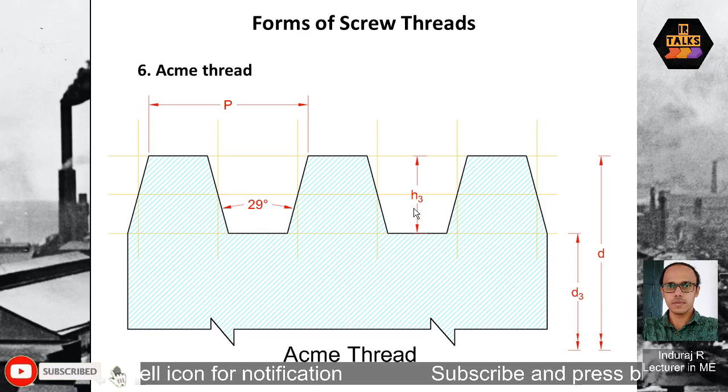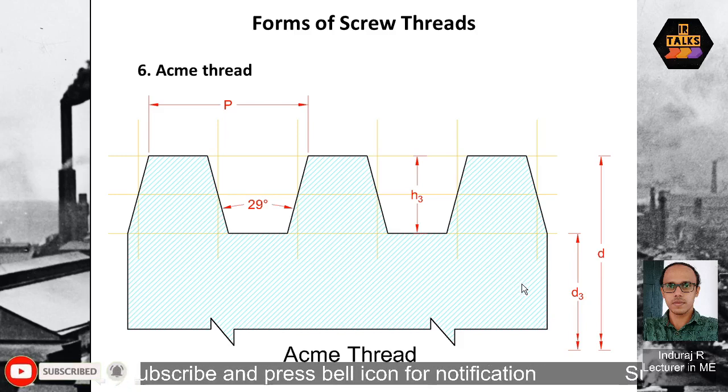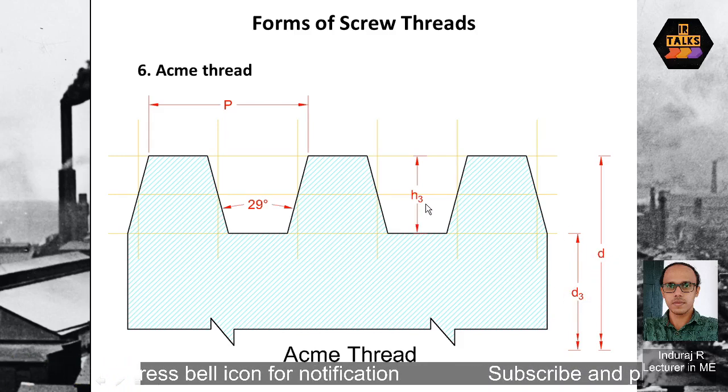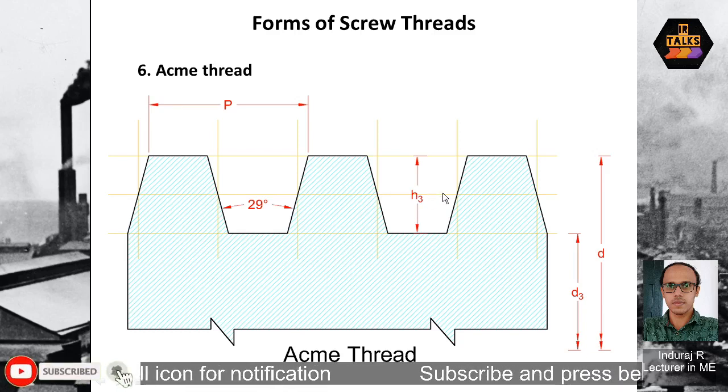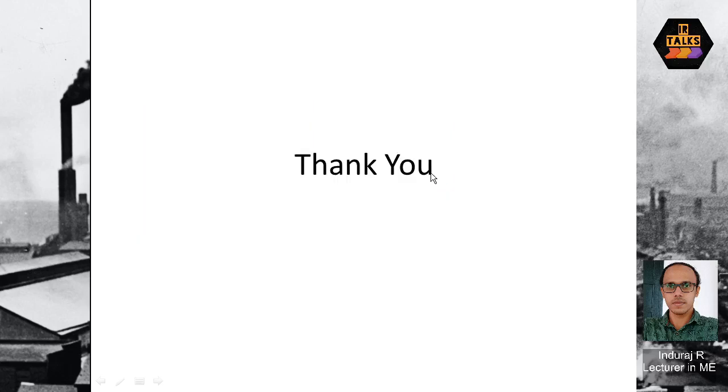Then mark h3, which is the depth of thread. Then d3, the minor diameter, and d, the major diameter. This is an external thread, which is why we use lowercase letters: d3, d, and h3. When you use these on the side, you will get the complete details of the figure. This is what we discussed with Acme thread. Thank you for watching.